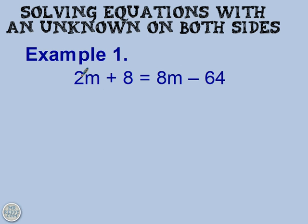I'm trying to say is we want to be left with a situation where there's an unknown just on one of the sides because then we can solve it in a very straightforward way. So we have an option. We can either take away 2m from both sides or we could take away 8m from both sides.